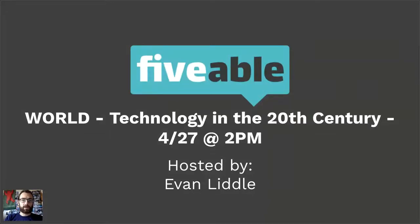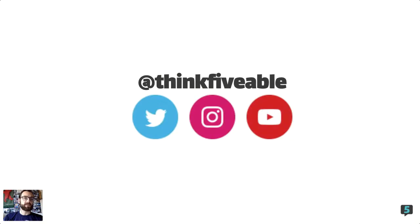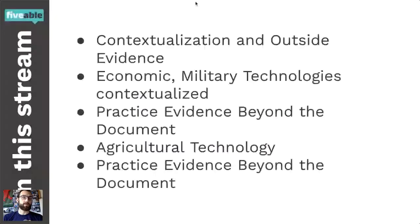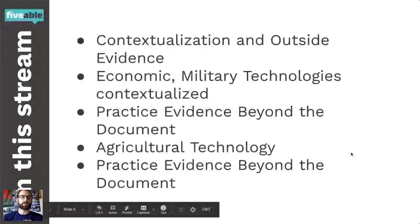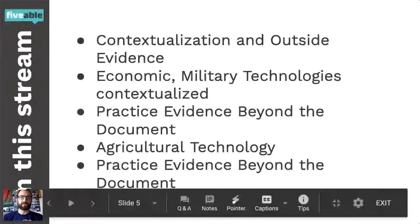Good morning, one and all, AP World students. We're going to talk about tech in the 20th century. Think to follow us on Twitter, Instagram, check out our YouTube channel. We're here for you. Today we're going to quickly go over what it means to contextualize and use outside evidence. We'll talk about economic and military technologies, do a little practice, talk about some agricultural technology, and then practice a little bit more.